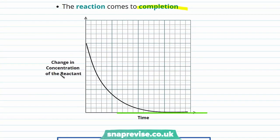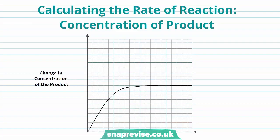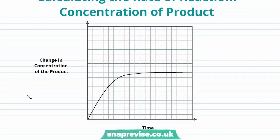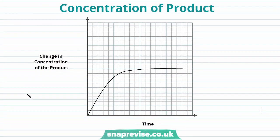I've shown you an example of a graph where we used the change in concentration of the reactant on our y-axis. If we were to use the change in concentration of our product, we get a slightly different shape graph — rather than seeing a decrease in concentration of the reactant, we see an increase in the concentration of our product as the reaction proceeds.